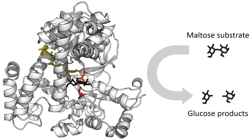Enzymes serve a wide variety of functions inside living organisms. They are indispensable for signal transduction and cell regulation, often via kinases and phosphatases. They also generate movement, with myosin hydrolyzing ATP to generate muscle contraction, and also transport cargo around the cell as part of the cytoskeleton. Other ATPases in the cell membrane are ion pumps involved in active transport. Enzymes are also involved in more exotic functions, such as luciferase generating light in fireflies. Viruses can also contain enzymes for infecting cells, such as the HIV integrase and reverse transcriptase, or for viral release from cells, like the influenza virus neuraminidase. An important function of enzymes is in the digestive systems of animals.